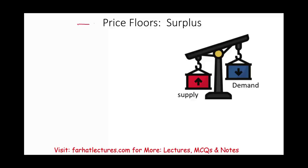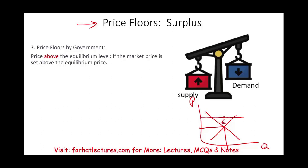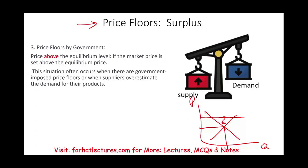What could also create a surplus is something called price floors, which are usually set by government. What is a price floor? It's a price above the equilibrium level. If this is the equilibrium — this is price, this is quantity — the government will set a floor, a price that's higher than the equilibrium. This situation occurs when there are government-imposed price floors or when suppliers overestimate demand and overproduce. A government price floor will create a surplus.